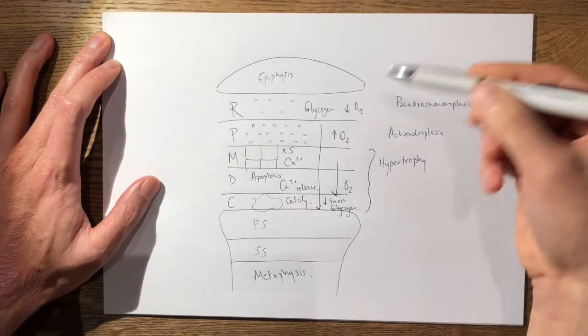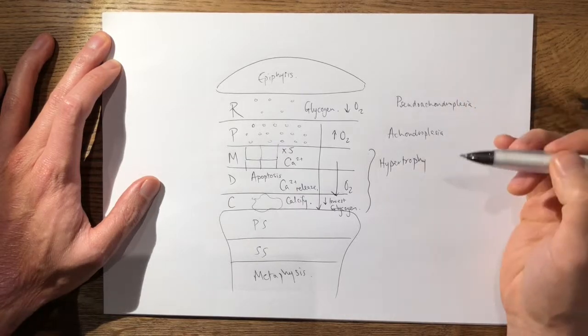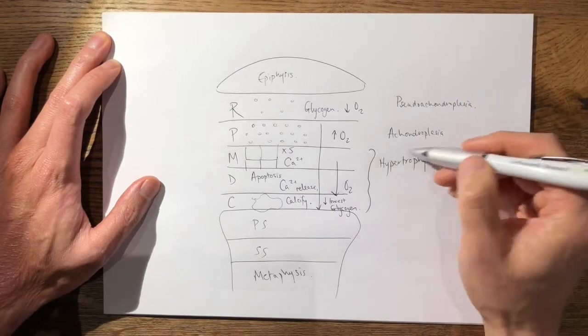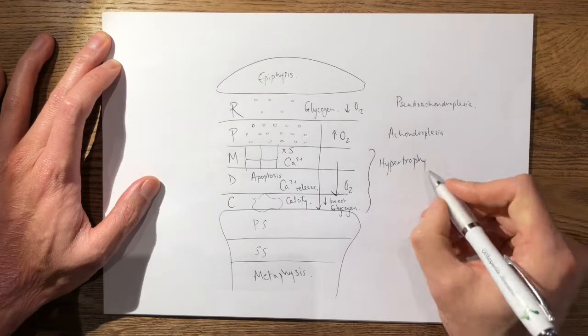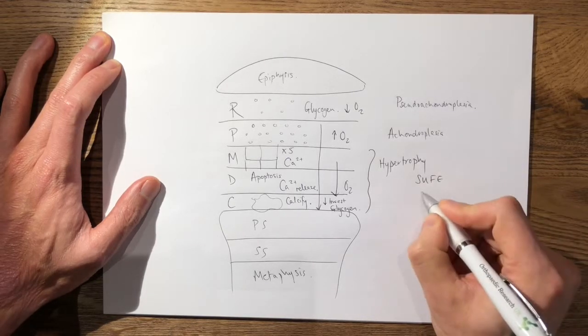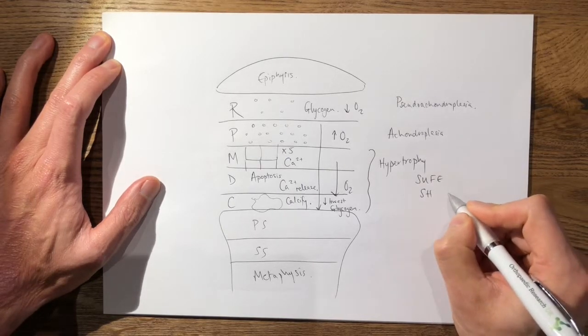That's pretty easy to remember - the first one is pseudoachondroplasia, the next one is achondroplasia. And then in the hypertrophic layer, because it's the weakest layer, you have your SCFE and your Salter-Harris fractures.